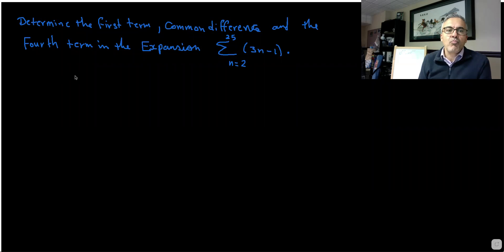Sigma notation. So expand this. So the first thing, n equals 2. So 7 into this equation, 3 times 2 is 6 minus 1 is 5.